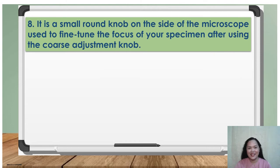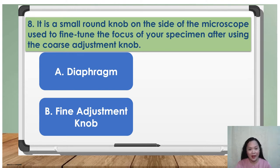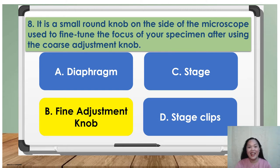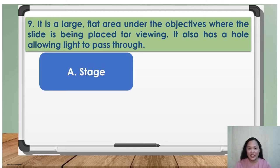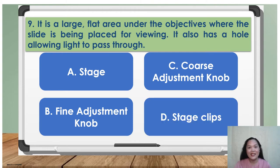Number eight: it is a small round knob on the side of the microscope used to fine-tune the focus of your specimen after using the coarse adjustment knob. A. Diaphragm, B. Fine adjustment knob. The answer is B, Fine adjustment knob. Number nine: it is a large flat area under the objectives where the slide is placed for viewing; it also has a hole allowing light to pass through. A. Stage, B. Fine adjustment knob, C. Coarse adjustment knob, D. Stage clips. The answer is A, Stage.